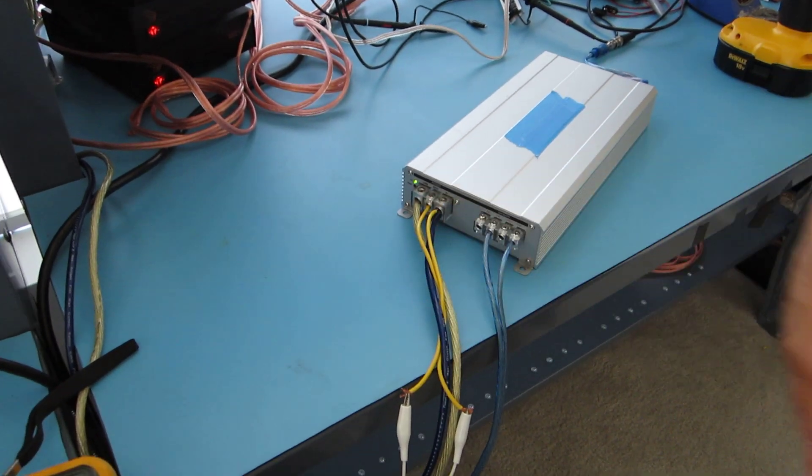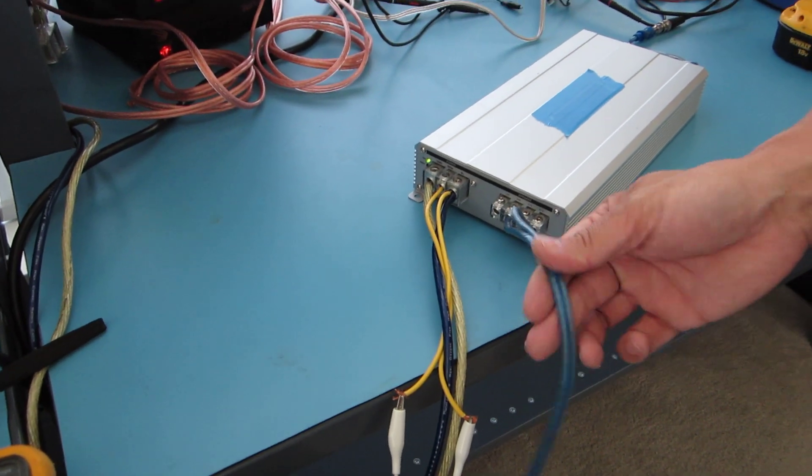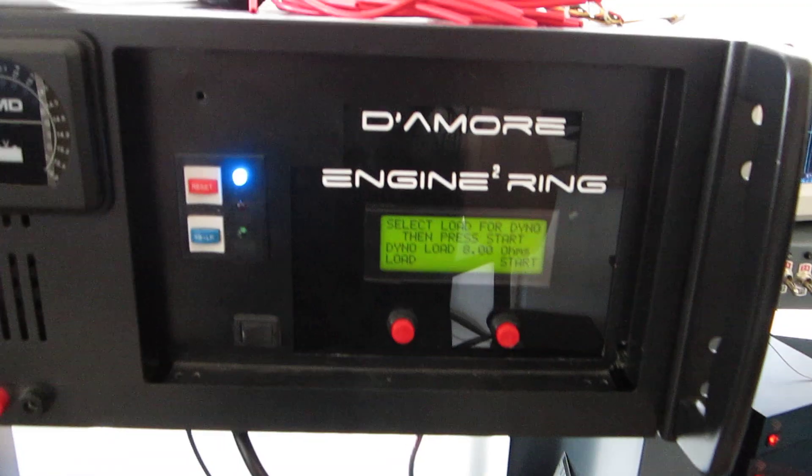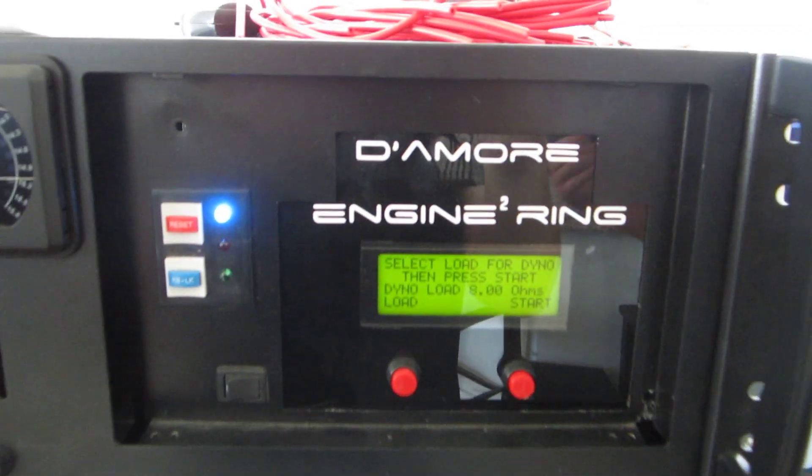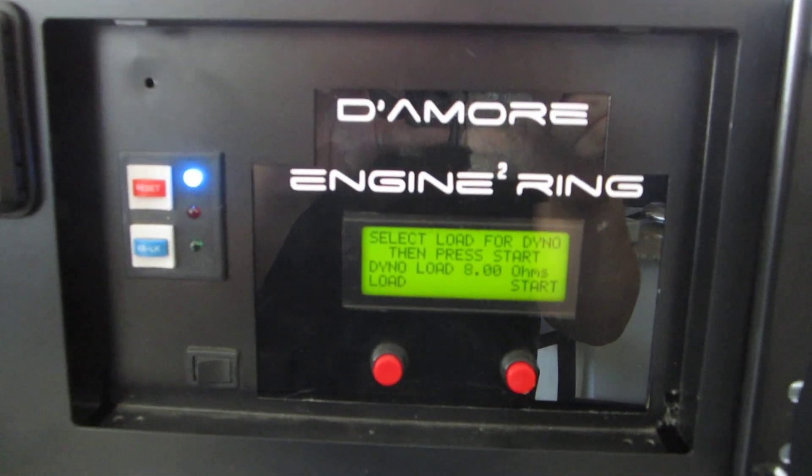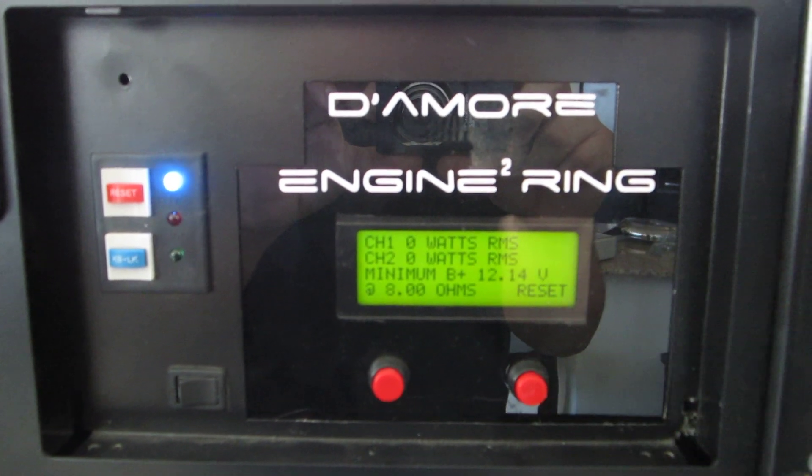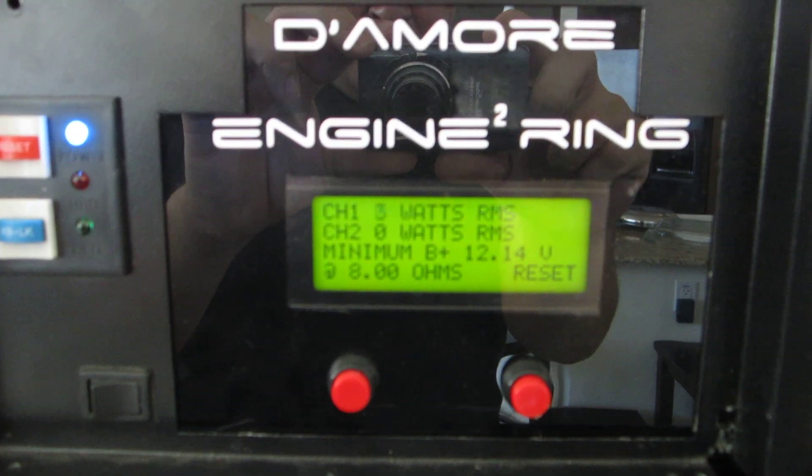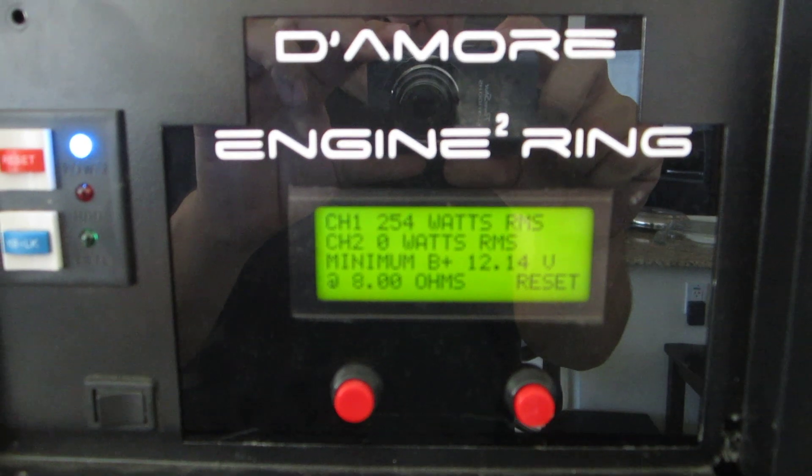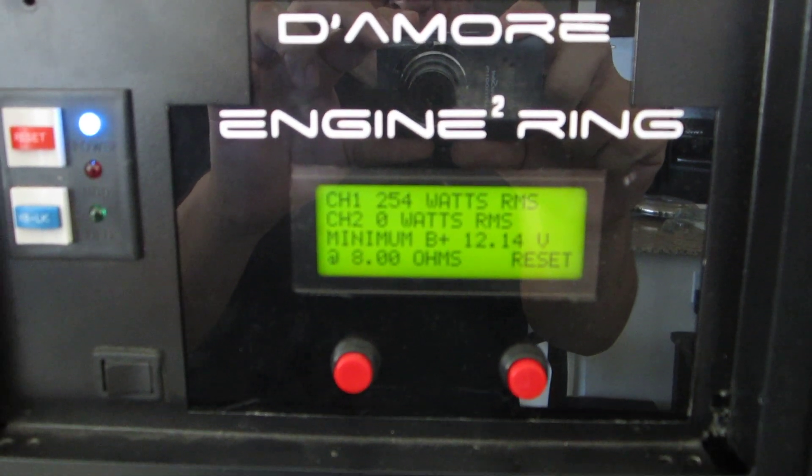Alright so we've disconnected all the meters and probes. We've hooked up the amp dyno. Set up for 8 ohms. It's as close as we can get to our numbers from before. So let's see what the amp dyno says at 8 ohms. There it is. 254.